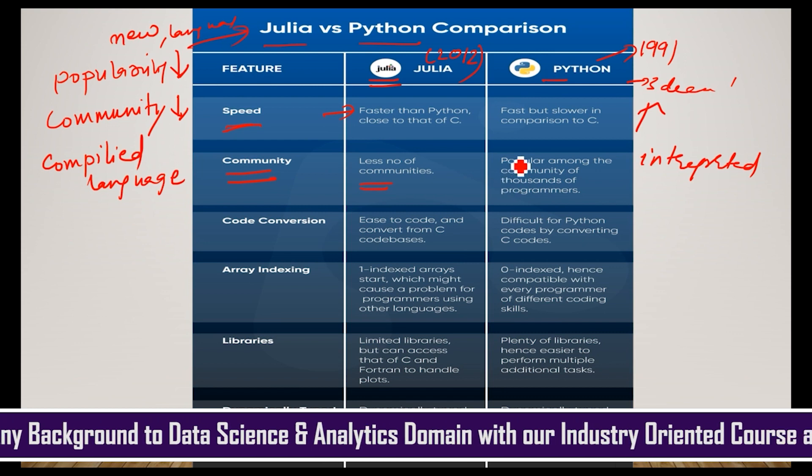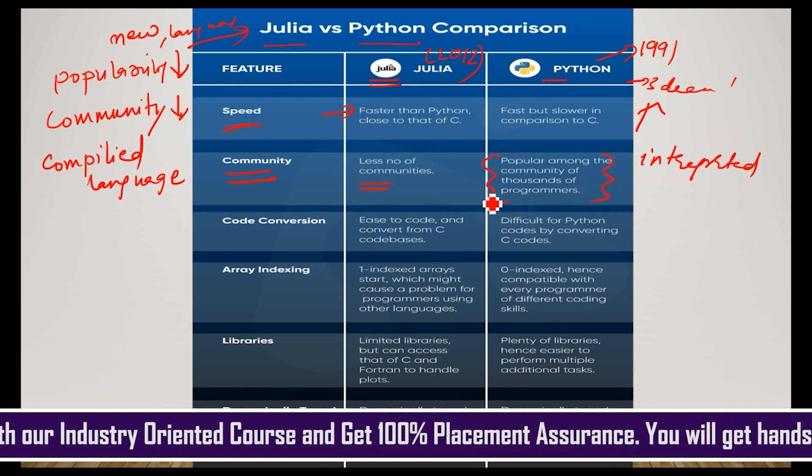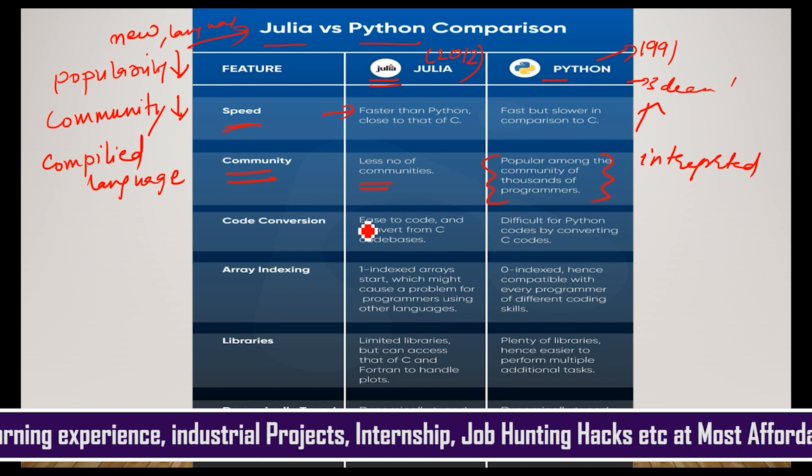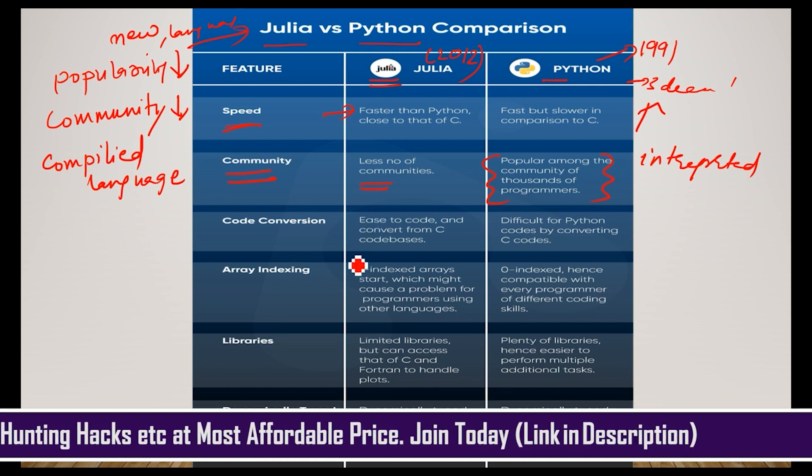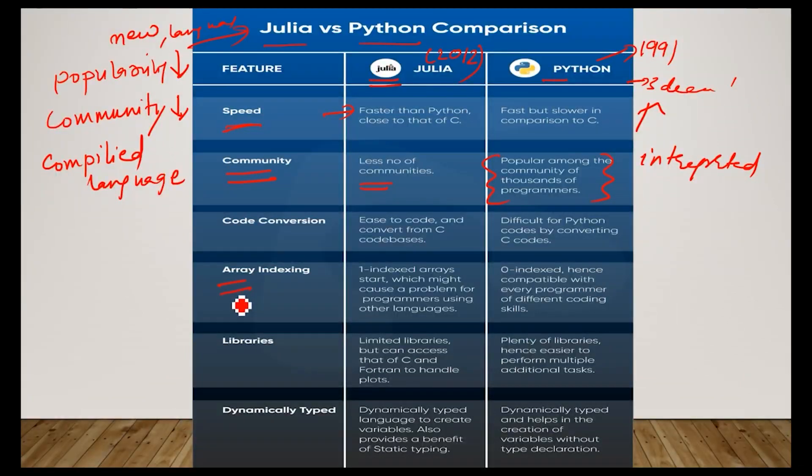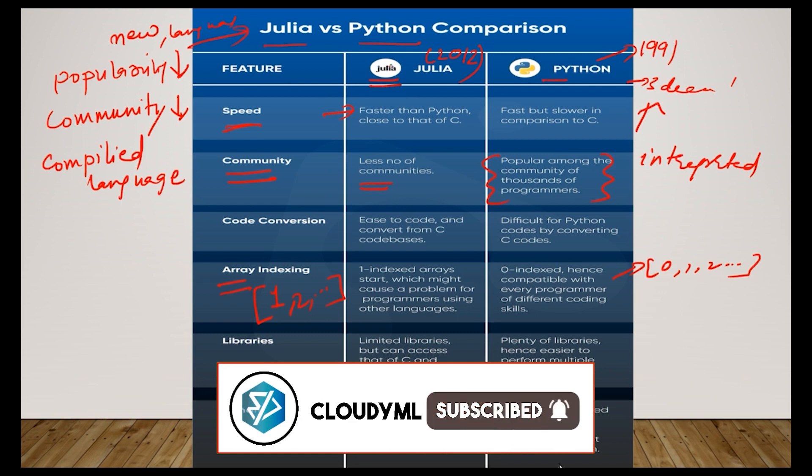As I said, the community, this is the disadvantage. Python is very good here in this aspect. Now the code conversion. Julia can actually bring in lot of libraries from C but Python has a difficulty doing that. Then you have array indexing. So Julia works in one, like the array for Julia starts from one, two and so on. But Python array starts from zero, one, two then. So since it's one indexed, it might cause a problem for programmers of other languages. Like if suppose you are coming from other languages and you are learning Julia, then you might have to train your mind that Julia is doing an indexing of one.